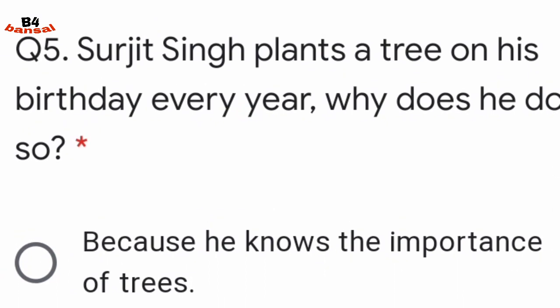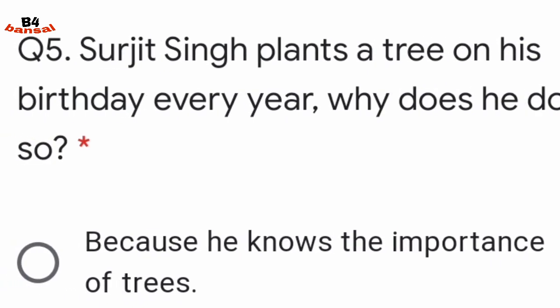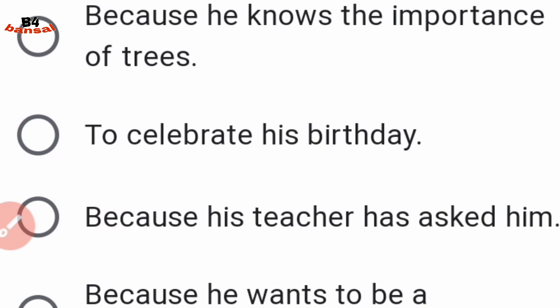Surjit Singh plants a tree on his birthday every year. Why does he do so? Options are: because he knows the importance of trees; to celebrate his birthday; because his teacher has asked him; or because he wants to be a good man. The first answer — because he knows the importance of trees — is correct.